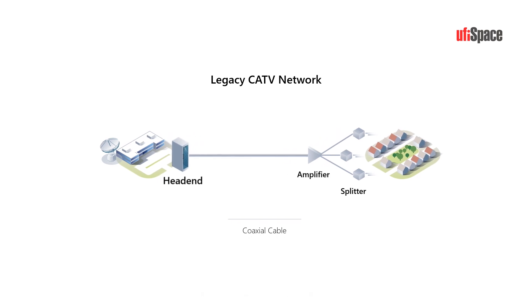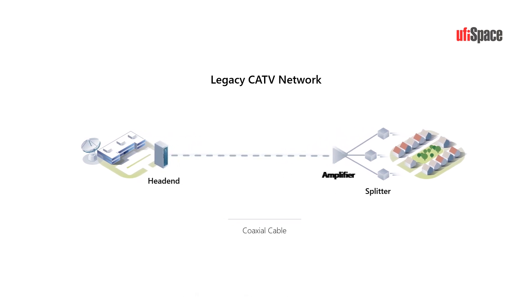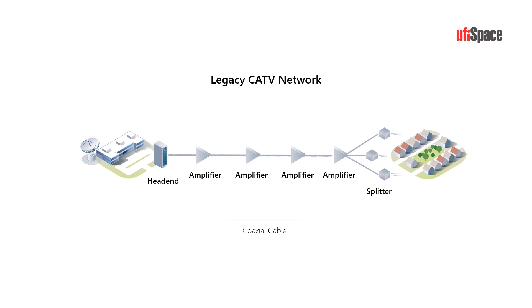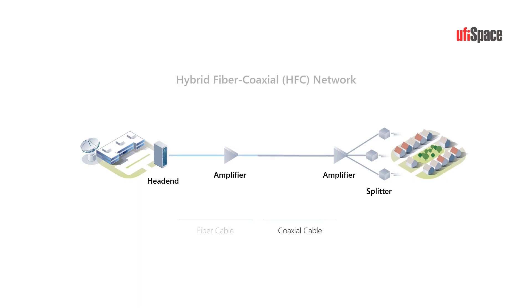However, there are some limitations with this architecture. Coaxial cable can lose signal strength over long distances, so amplifiers are used to extend the signal. In addition, coaxial cables are more prone to wear and tear over time, requiring high maintenance and occasional replacement. As technology continues to advance, newer solutions like Hybrid Fiber Coaxial are being adopted to address these limitations.